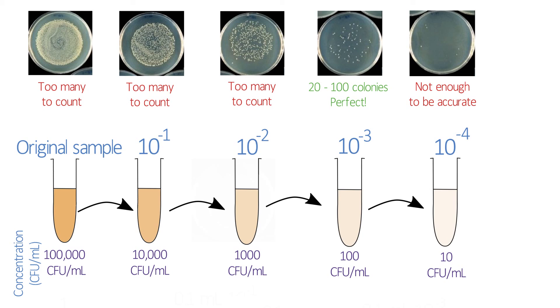Any more than that, and there'll just be too many colonies to count, but counts below 20 tend to be quite inaccurate. It just becomes a matter of chance as to whether you get, say, four or six bacteria on the plate, but that might mean that you get quite significant errors in your calculations.